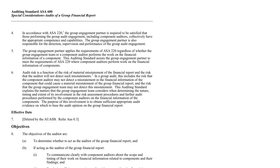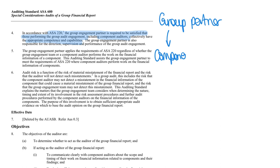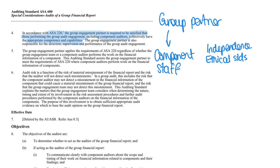When we look at audits of groups, ASA 220 on quality control says the engagement partner has to be satisfied that those performing the group audit, including the component auditors, have the right levels of skill. If you are the group partner, you are responsible for making sure that component staff meet the requirements of ASA 220, which includes following relevant government laws, meeting independence requirements, and meeting ethical standards under our code of ethics — either APES 110 or the new code of ethics.